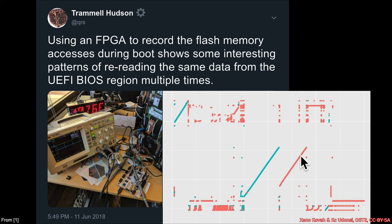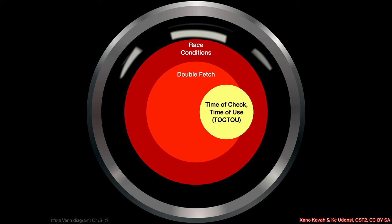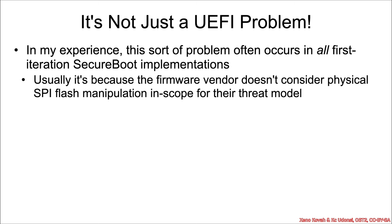These are time-of-check, time-of-use problems — specifically TOCTOU problems in the context of double fetch. There is clearly a double fetch going on. If there is a secure boot system in play, there is a check: the initial integrity verification and signature checking is the time of check, but later, because of the double fetch, the time of use could be different.